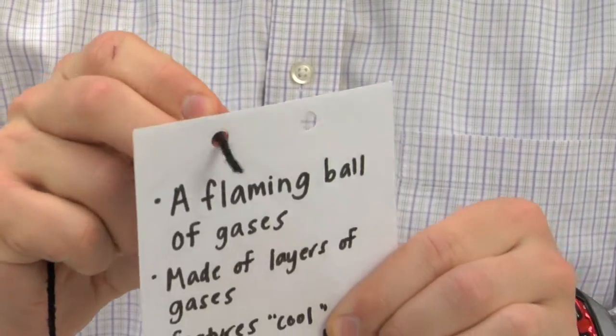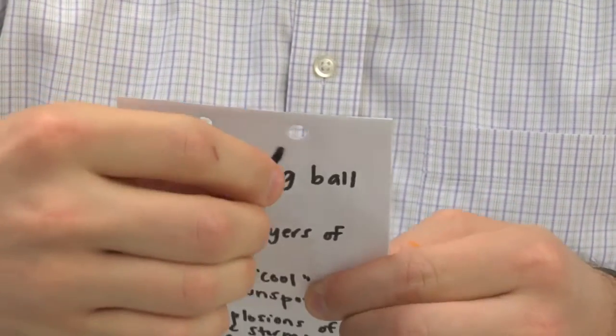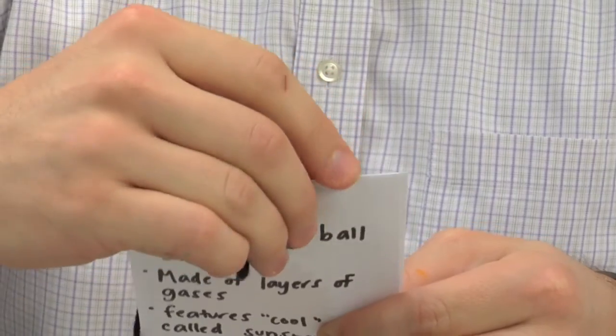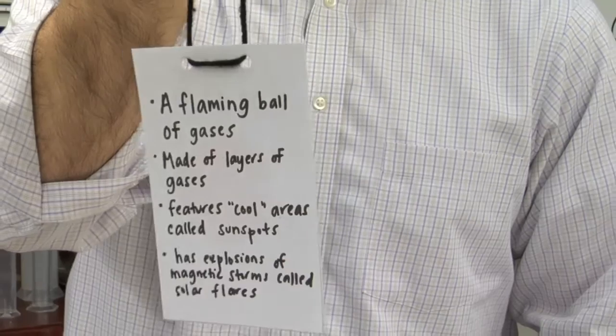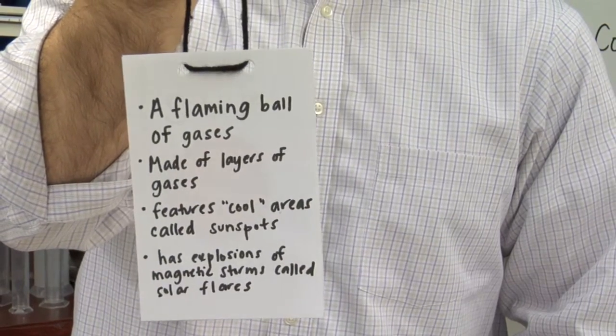To assemble the hang tag, place the cards together with a list of characteristics on top. Punch two holes at the top of the cards and string yarn through the openings. Tie the ends together and wear as a necklace.